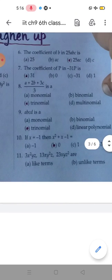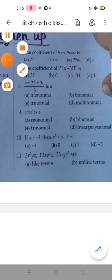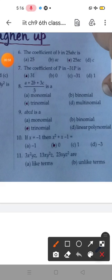Now question number 6. Coefficient of B - is drum me jo B se multiply hai, 25, A, C. B se multiply hai, so option number C. Coefficient of B is minus 31, option number C.